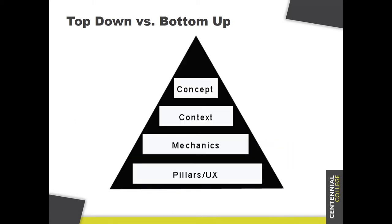Let's take a look at this concept. We can look at top-down versus bottom-up as a pyramid, with concept on top, then context, mechanics, and pillars/UX. If you look this up online, you'll see a lot of different words used in this type of diagram — the words change, but the underlying ideas don't. Sometimes there are even five categories; I like to keep it down to four.